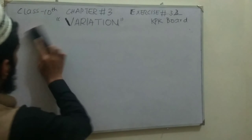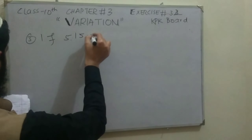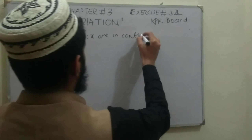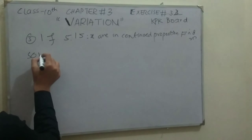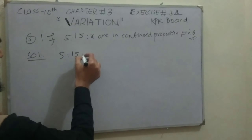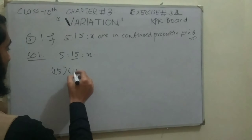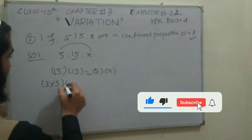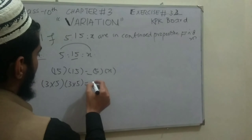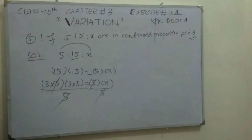Question 3 is important: if p, 15, and x are in continued proportion, find x. Using the continued proportion property, the middle number squared equals the product of the extremes: 15² = p · x, so 225 = p · x. We can write 225 = 9 × 25. Dividing both sides by p gives x = 45.